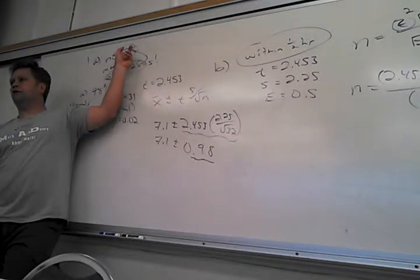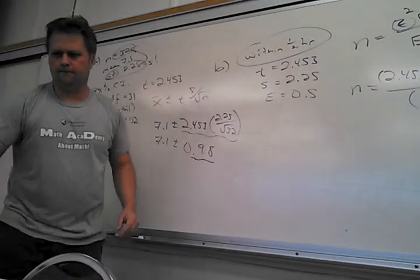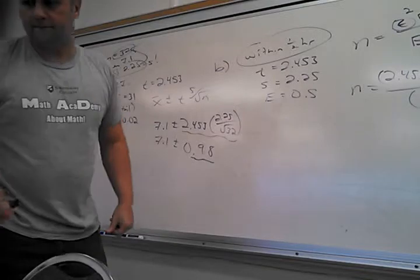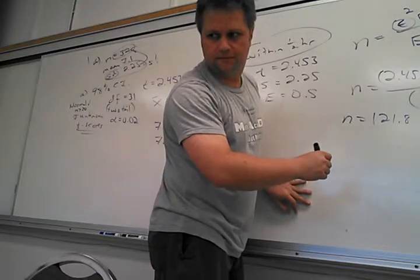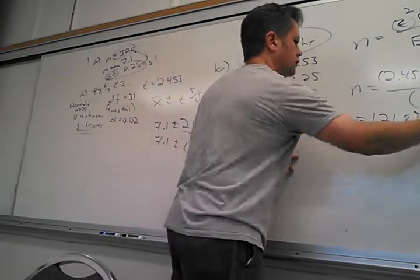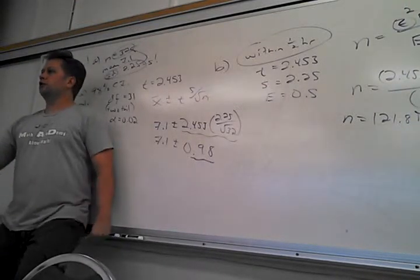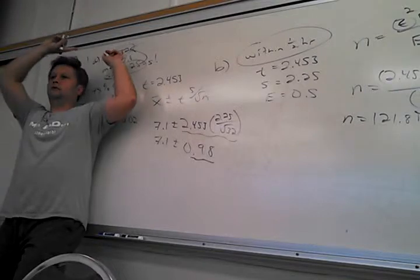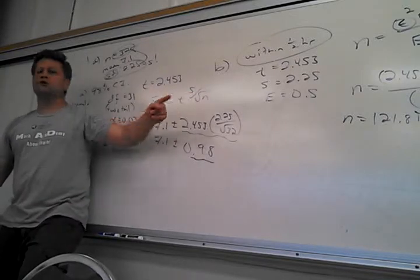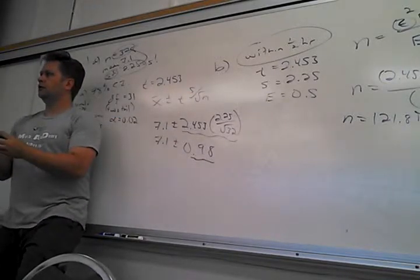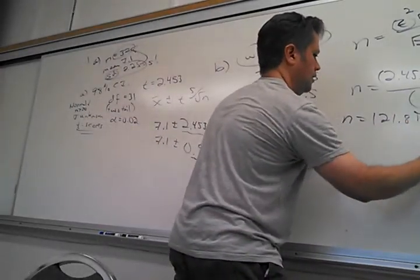You end up with very roughly four times the original — about 121.8, so round up to 122. If you just say 122 I'm okay with that. But officially the question says how many more people? I already talked to 32 in part A. I need 122 total, so I need 90 more. How did I know to use that formula? Because I'm looking for N — 'how many more, how many?' That's N.